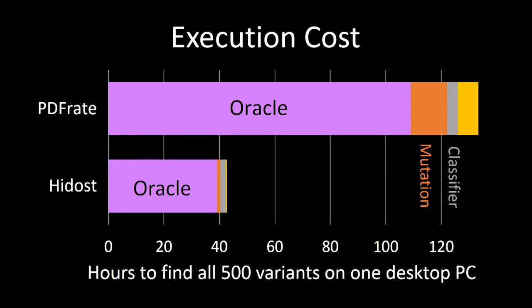Genetic programming has a reputation for being very expensive, but in this case it's quite practical. Running on a commodity desktop PC, it takes just over 120 hours to find all 500 variants against the PDF Rate classifier — about 15 minutes per variant. And as you develop more variants it gets faster, because you can reuse many of the mutation traces that worked on new seeds.